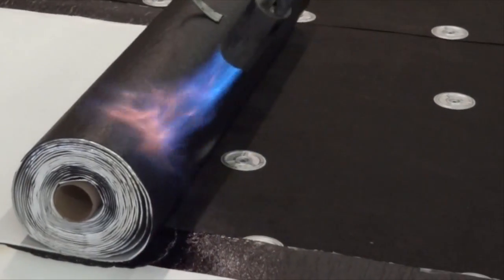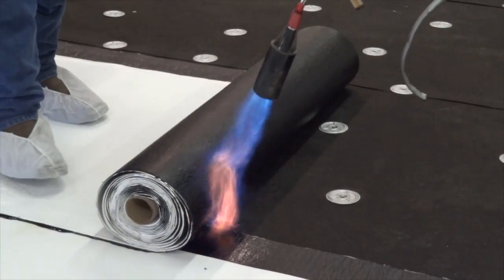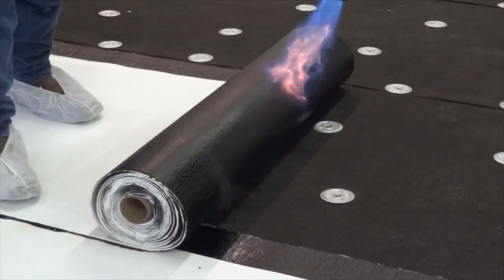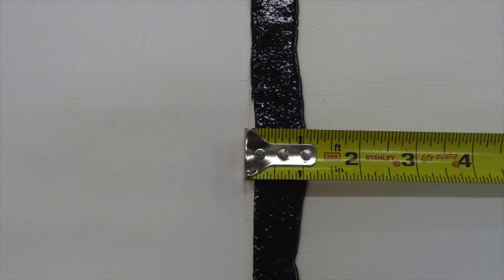To ensure proper compound flow-out is achieved at the lap seam areas, a weighted roller may be used. Roller application should follow behind the torch no less than 2 feet and no more than 3 feet away to ensure the membrane will be at the proper temperature to produce the proper flow-out. Walking in the seam is also acceptable. Do not exceed a maximum of 1 inch compound flow-out as this indicates overheating.